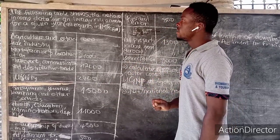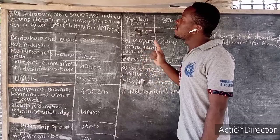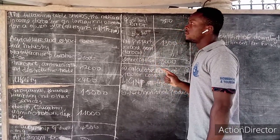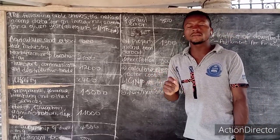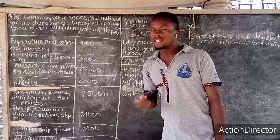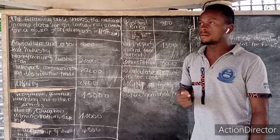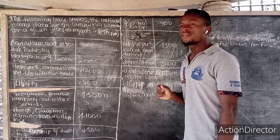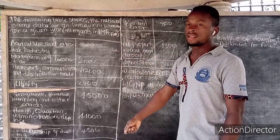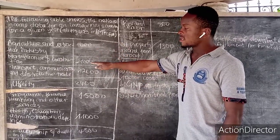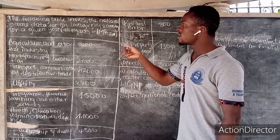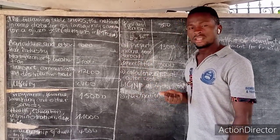In the question proper, they said the following table shows the national income data for an imaginary economy for a given year. Remember, all national incomes are calculated in terms of a year, not in terms of a month. And they say all the figures are in million francs CFA — that means everything here is a million, e.g. 600 million, 1,021 million.